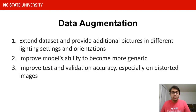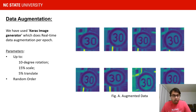The first step that we are doing is data augmentation. We are trying to extend the dataset by providing additional pictures in different lighting settings and orientations. To perform data augmentation, we have used the Keras image generator which does real-time data augmentation. There is a change in the rotation, scaling, and translation along the x and y axes in a random order.